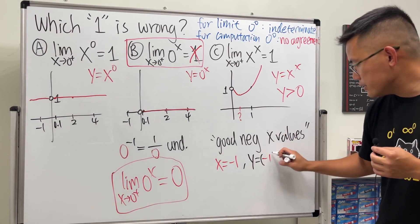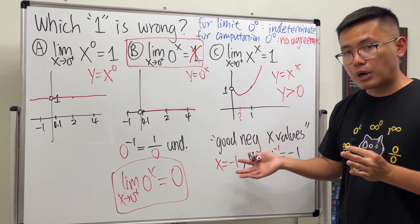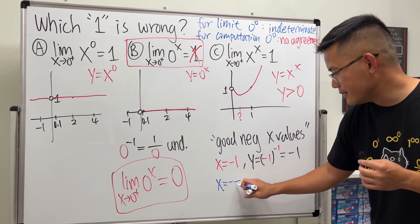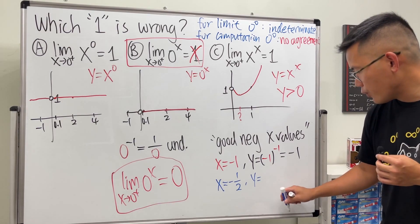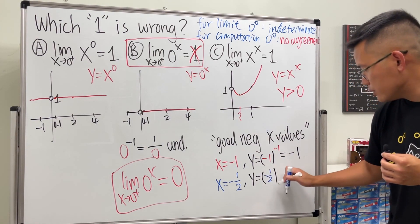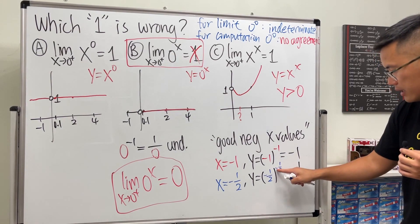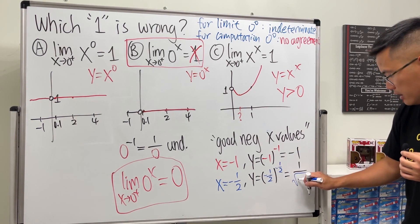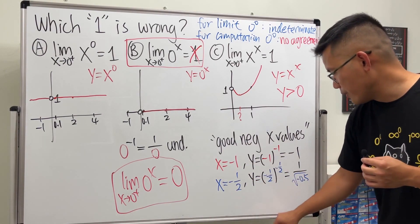However, x = -1/2 does not work. We'd get y = (-1/2)^(-1/2), which equals 1 over the square root of -0.5 — that's imaginary. So -1/2 is not a valid x value here.